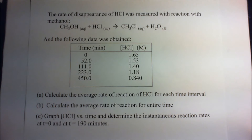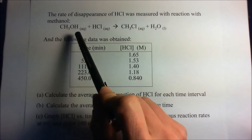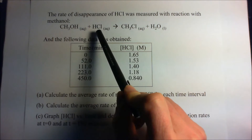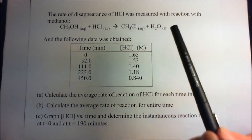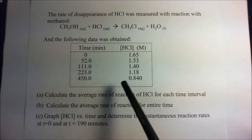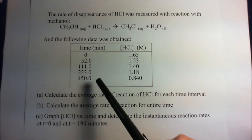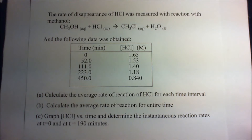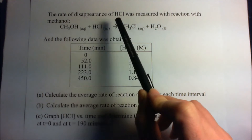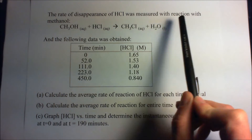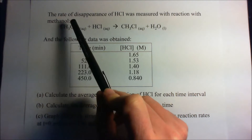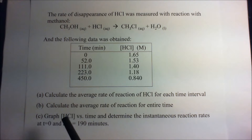Here we have another kinetics problem. We've got this reaction here, which is the reaction of methanol with hydrochloric acid to give us methylene chloride and water. Here's a table of some data that we've obtained, and the whole problem looks like this. The rate of disappearance of hydrochloric acid was measured with reaction to methanol, and we've got the following data.